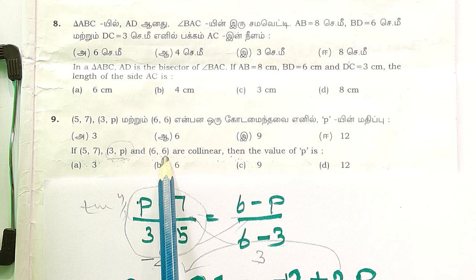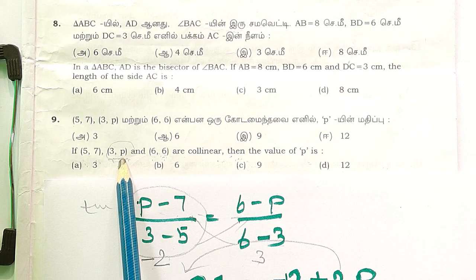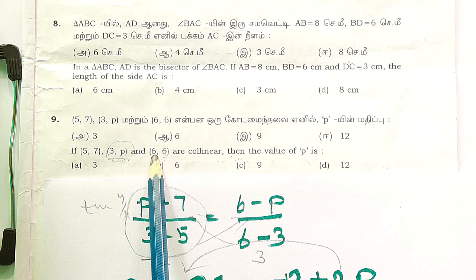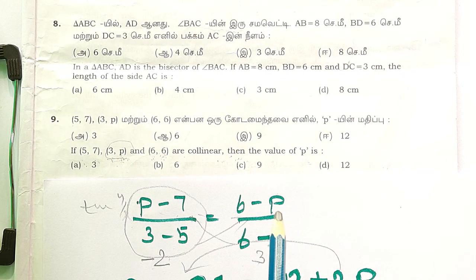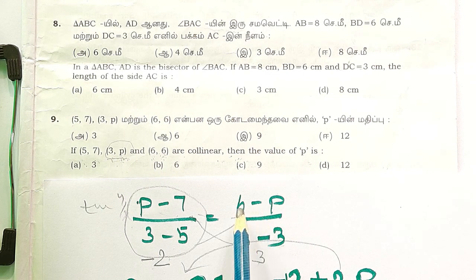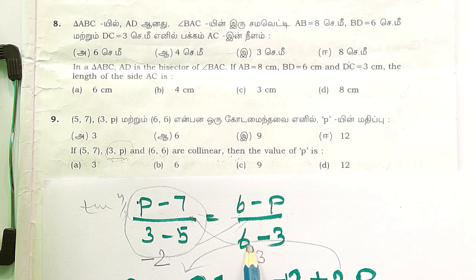y3, y3 minus y2, x3 minus x2. From that, 6 minus p by 6 minus 3. In short, we have